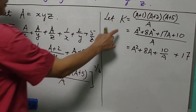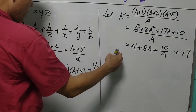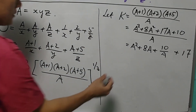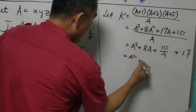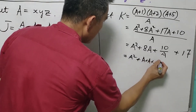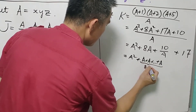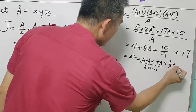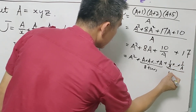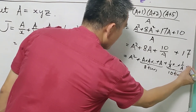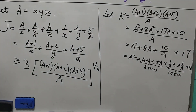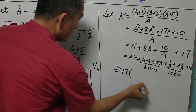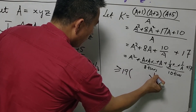We can get the minimum value of K using calculus, but it is also possible using AM-GM inequality. We write 8A as A repeated 8 times, and 10 over A as 1 over A repeated 10 times, then copy down the last value 17. There are 19 items here, so this is greater than or equal to 19 times the product to the power of 1 over 19, plus 17.